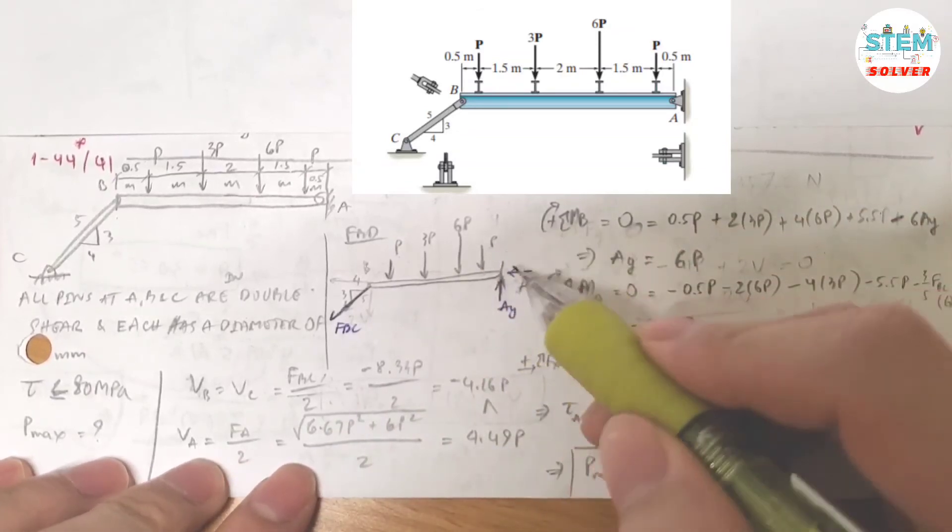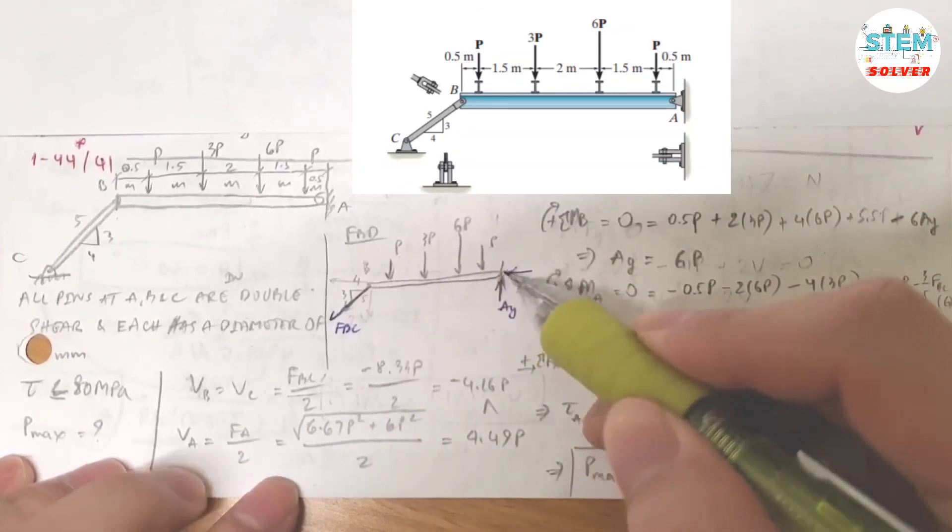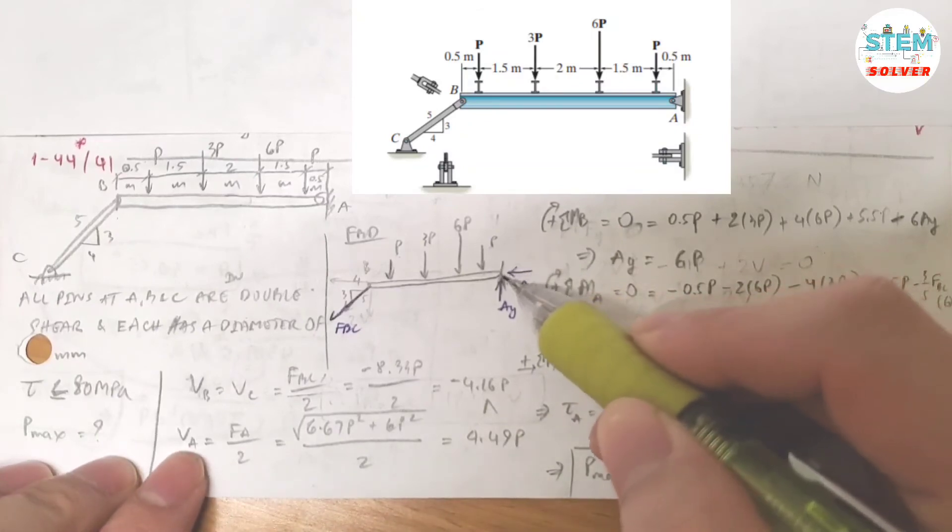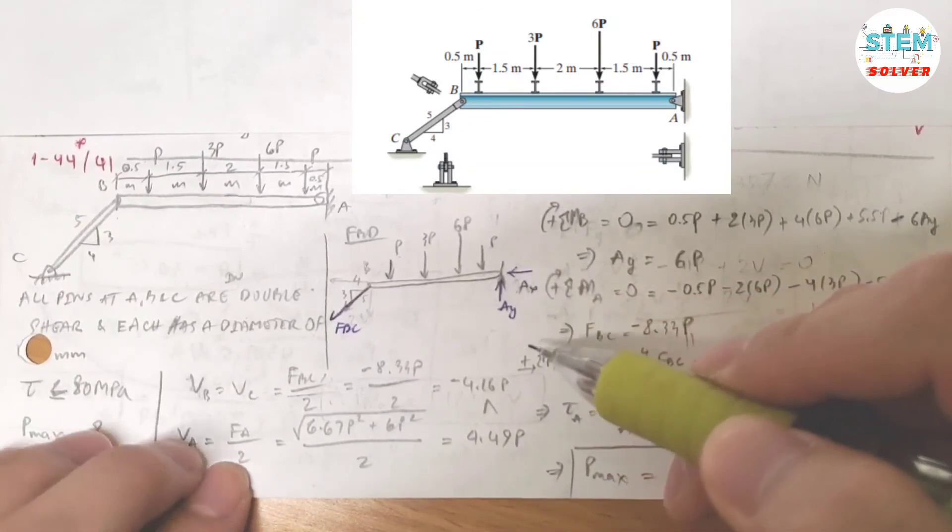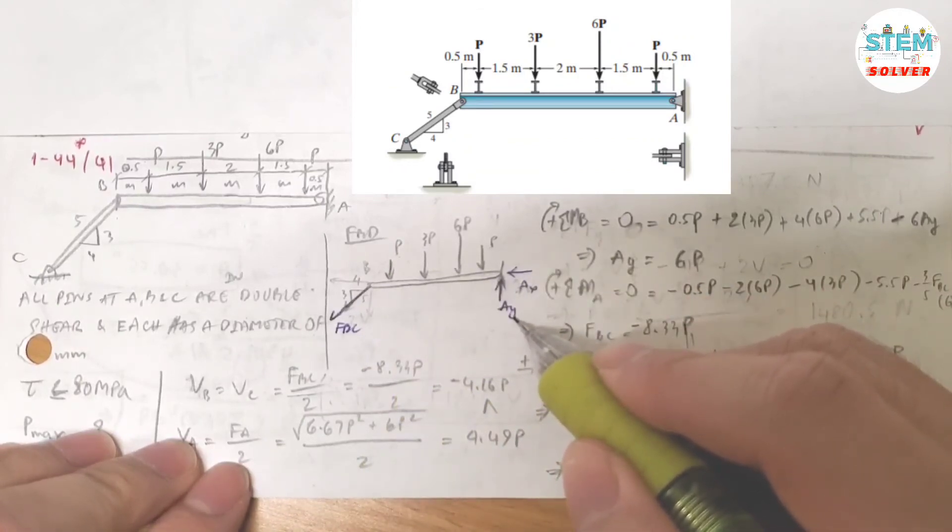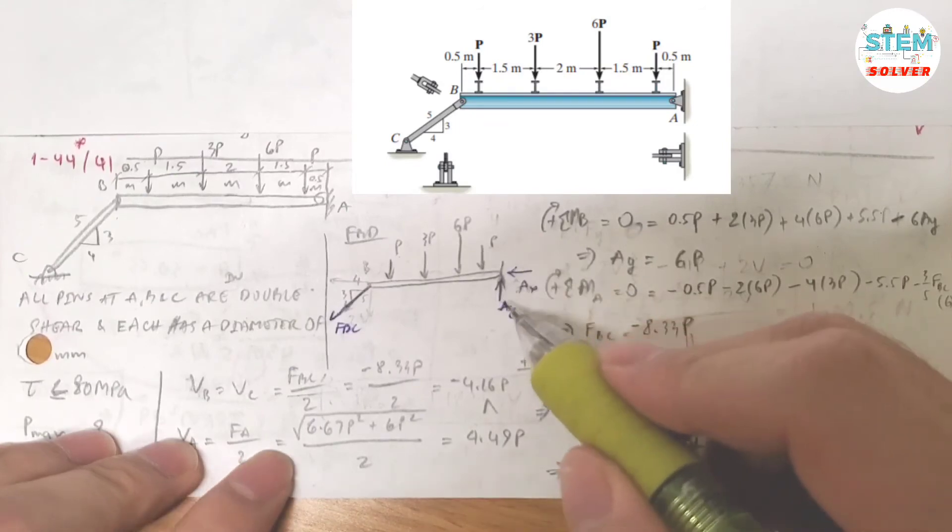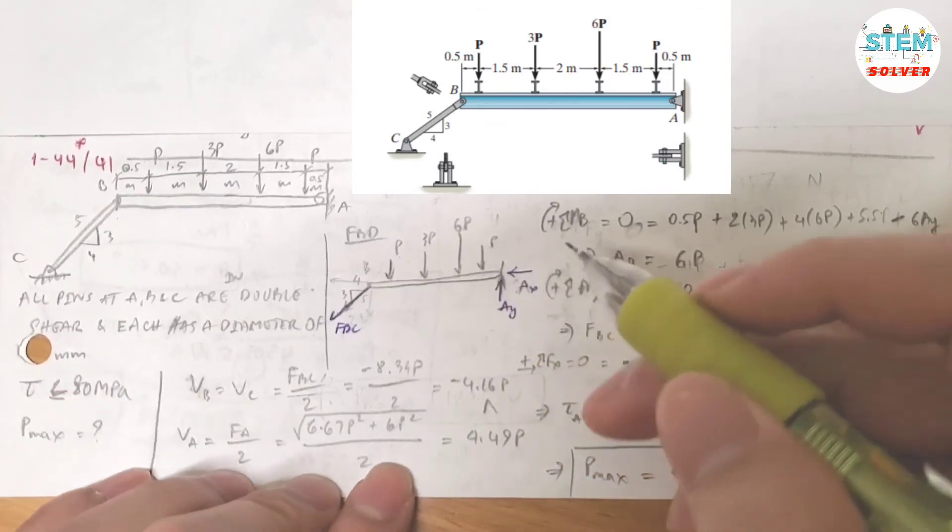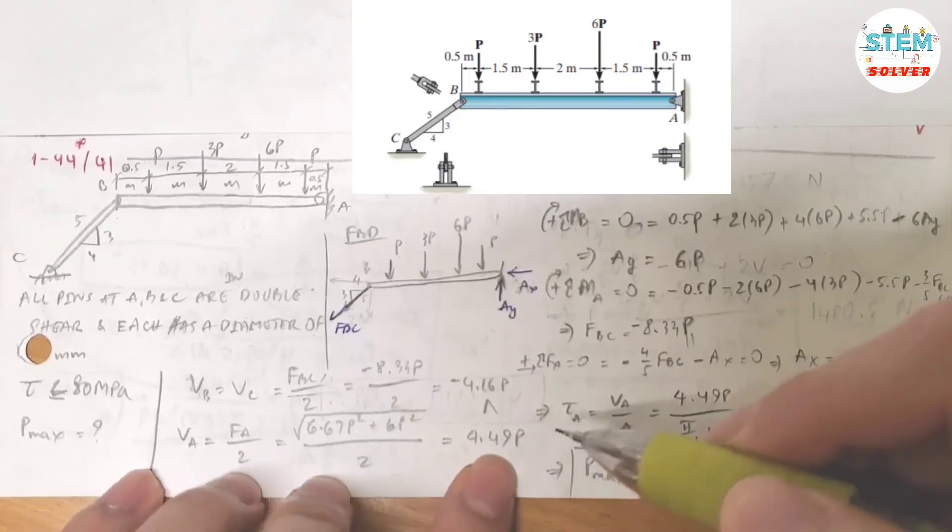And shear at A, at A you also have a pin, you have double shear. So VA equals FA divided by 2. What is FA? FA is the force in X component squared plus force in Y component squared, and then take square root of that. That gives you 4.49P.